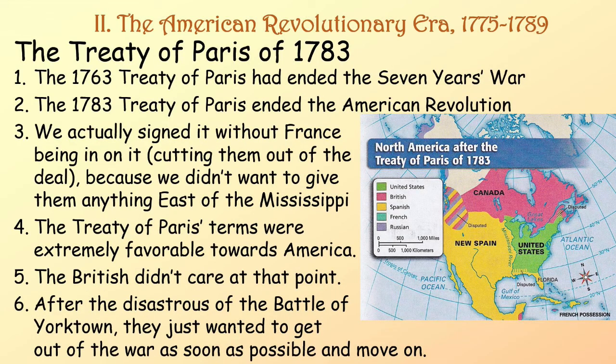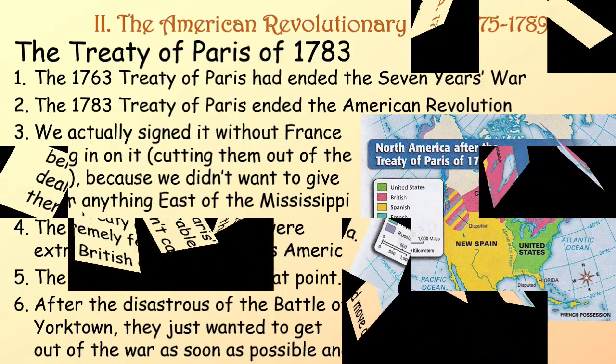Finally, the Treaty of Paris of 1783. The 1763 Treaty of Paris had ended the Seven Years' War, and the 1783 Treaty of Paris ended the American Revolution. We actually signed it with Britain without France being part of it, cutting them out of the deal because we didn't want to give them anything east of the Mississippi, which we took. The Treaty of Paris' terms were extremely favorable towards America. The British didn't really care at that point after the disastrous Battle of Yorktown — they just wanted to get out of the war as soon as possible and move on.